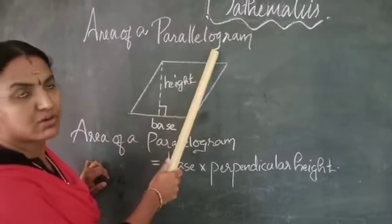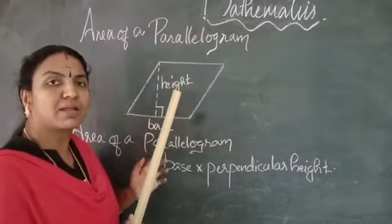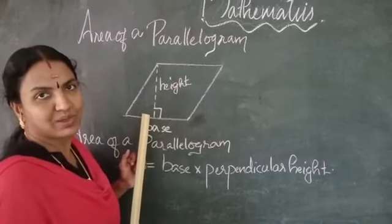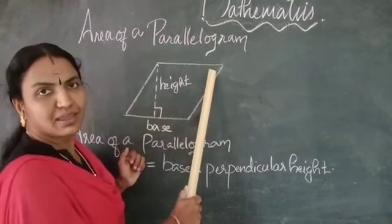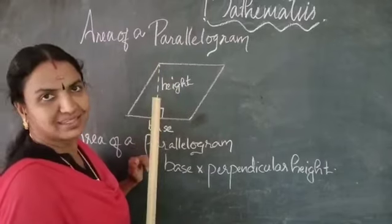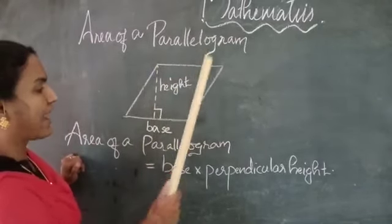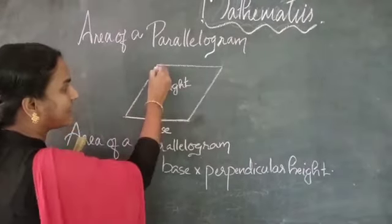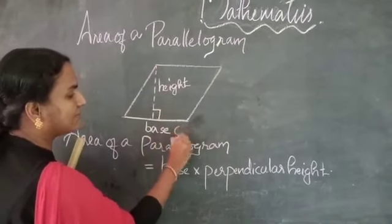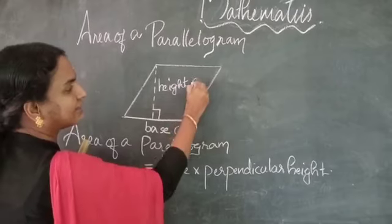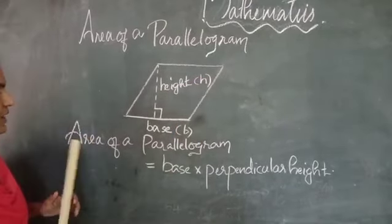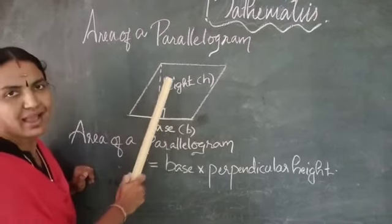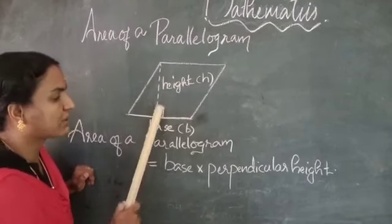Area of a parallelogram. We already learnt about the parallelogram. A parallelogram is a quadrilateral in which the opposite sides are parallel and equal, opposite angles are equal, and the diagonals bisect each other. The area of a parallelogram — this is the base and this is the height. Base is denoted by B and height is denoted by H.